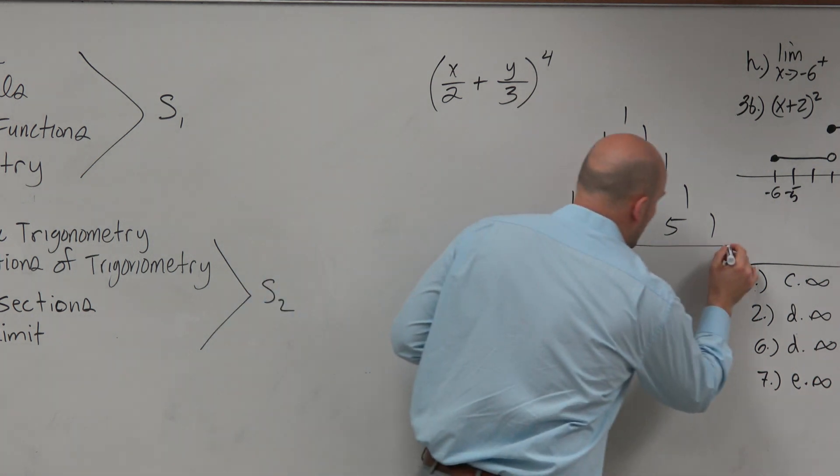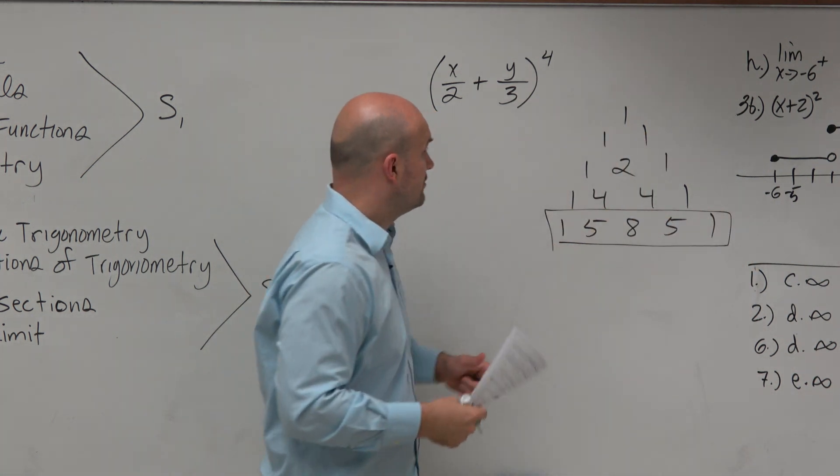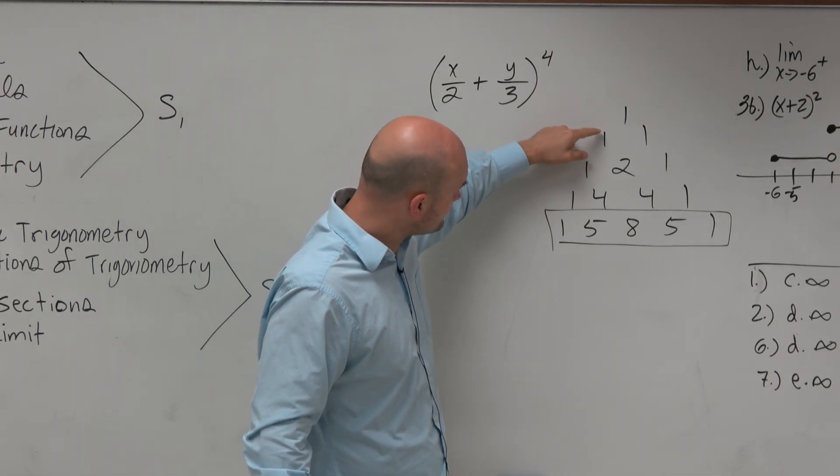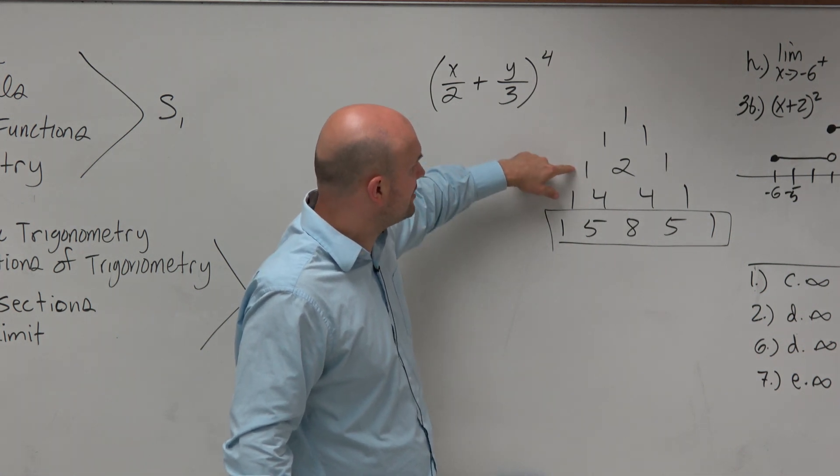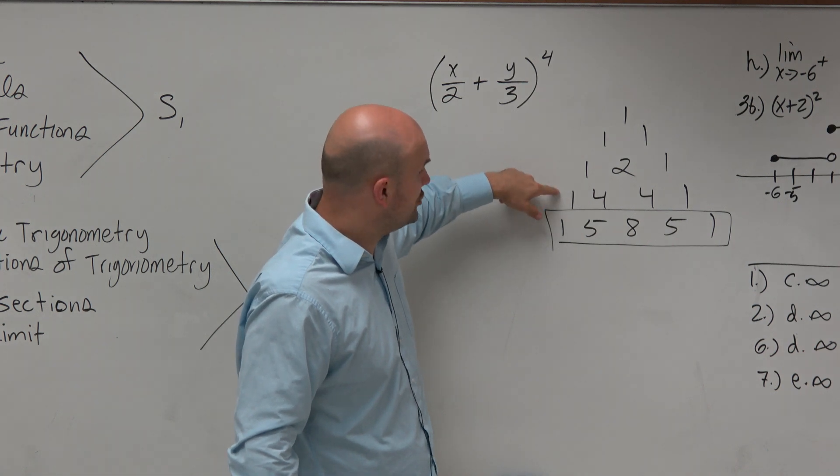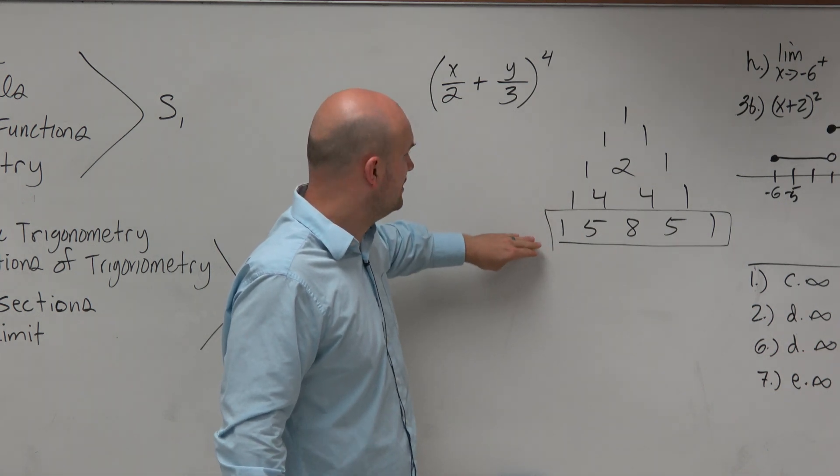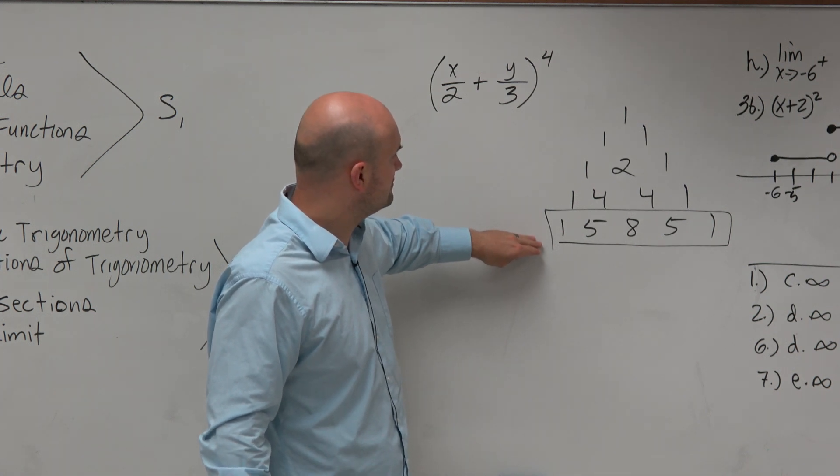So this is going to be our row of coefficients. Because that's just x to the 0, that's x to the first, that'd be x squared, that's cubed. And then this would be to the fourth power of our expansion. So just remember, it's that extra fourth row.